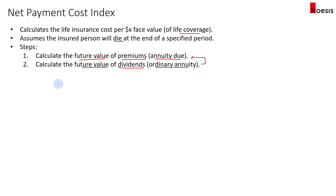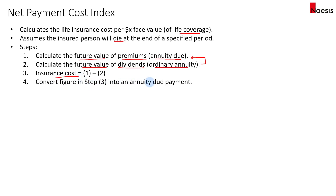The dividends are used to offset the premiums. Once you offset them, that gives us the insurance cost. The insurance cost at the end of that period is then converted back into an annuity amount based on annuity due. In other words, we are calculating the net premium by taking the premium net of the dividend.